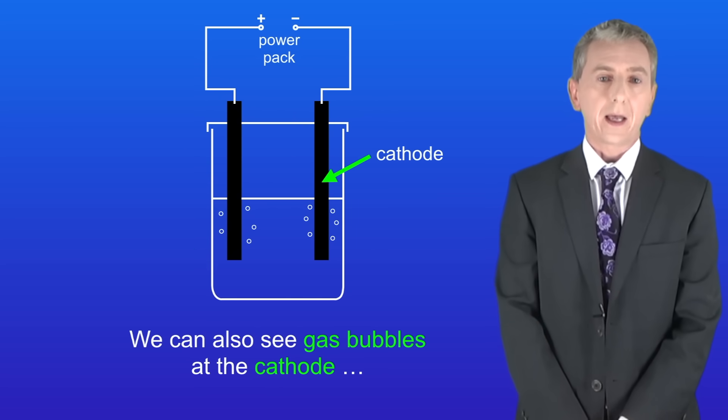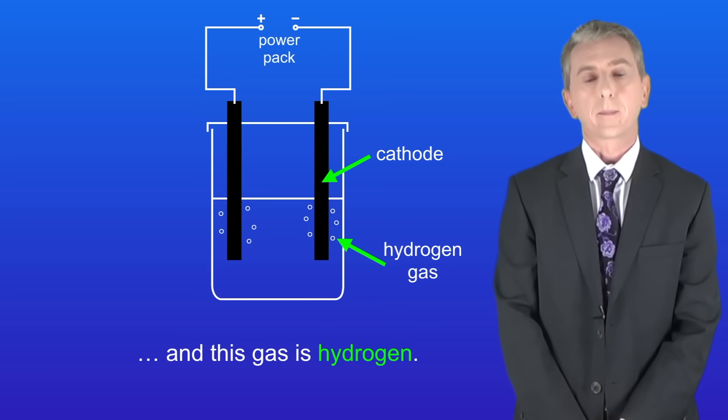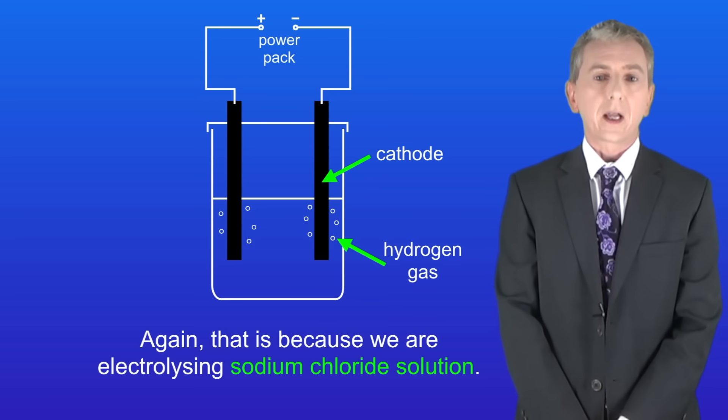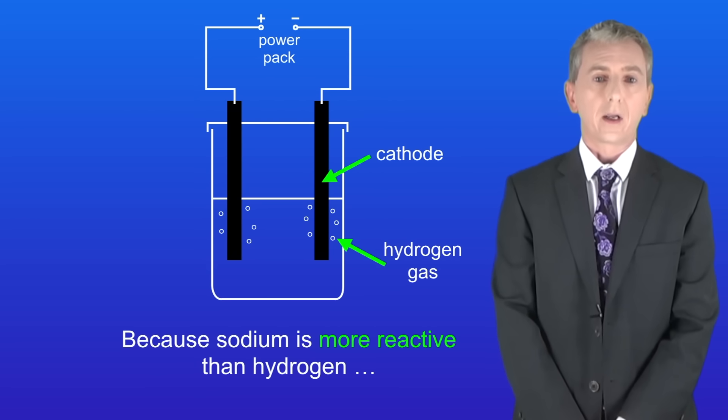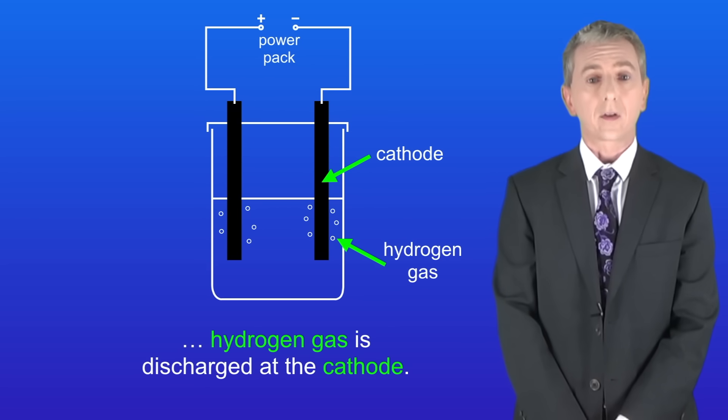We can also see gas bubbles at the cathode and this gas is hydrogen. That's because we're electrolyzing sodium chloride solution and because sodium is more reactive than hydrogen, hydrogen gas is discharged at the cathode.